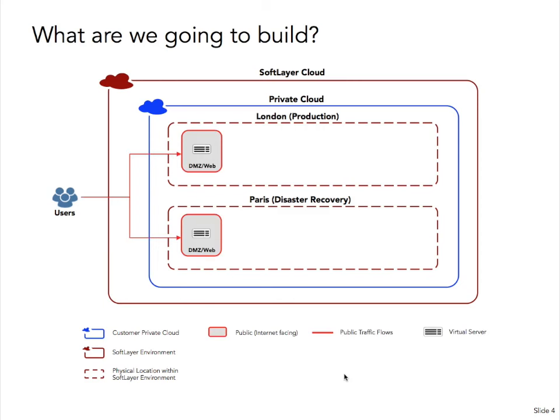First we're going to have a DMZ and a web tier, which will be the only machines capable within our lab environment of receiving public traffic from the users. So public traffic in red will come into our DMZ web. Then we will add an application layer in a private secured network. There will be no public-facing internet IP addresses on these machines. So in SoftLayer terms, you would be ordering a virtual machine with private-only interfaces.